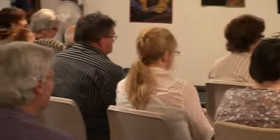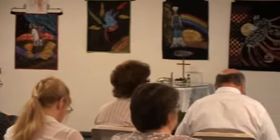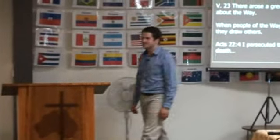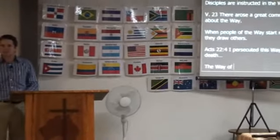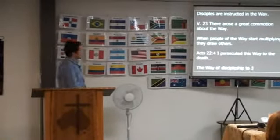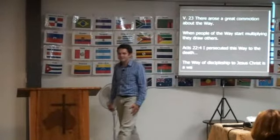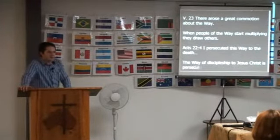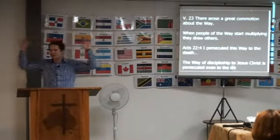Acts chapter 22 verse 4. God wants us to get into this way and pray that more and more the number of disciples will multiply. In Acts 22:4, Saul, when he's Paul, is giving his testimony and he said, 'I persecuted the way to the death, binding and delivering into prisons both men and women.' So in his testimony he said, 'I persecuted the way.' The way will be persecuted. The way of discipleship to Jesus Christ is a place of persecution. It may come from family, from relatives, from friends, from the society at large.